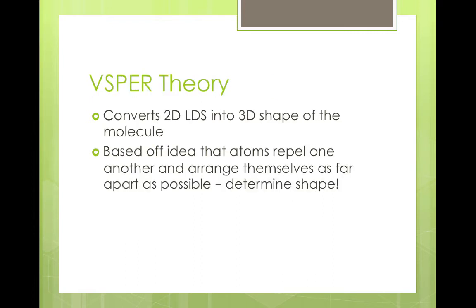We then continue the discussion by reintroducing VSEPR theory. It converts the two-dimensional Lewis dot structures into three-dimensional shapes of an entire molecule. It's based off the idea that atoms repel one another, and as a result, arrange themselves as far apart as possible, and that determines the shape. This allows us to go from the two-dimensional Lewis dot structure into a three-dimensional representation of what the actual molecule looks like in three-dimensional space, how it behaves in the actual beaker.